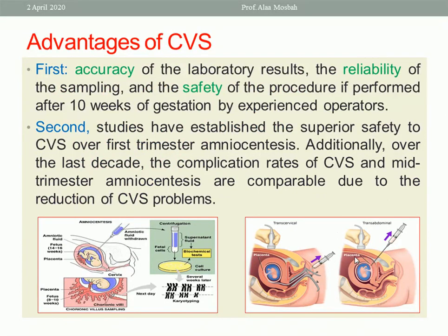Advantages of chorionic villus sampling include: accuracy of lab results, reliability of sampling, and safety of the procedure when performed after 10 weeks by experienced operators. Studies have established superior safety of CVS over first trimester amniocentesis. Over the last decade, complication rates of CVS and mid-trimester amniocentesis are comparable, and some recent studies even show CVS has fewer complications. Another key advantage is the early diagnosis of problems, as CVS is done between 10 to 12 weeks gestational age.